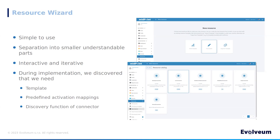We also implemented several improvements while building the resource wizard. For example, working with templates makes it easier to create multiple resources with the same configuration. We added predefined activation mappings that simplify configuration for common activation use cases such as delay delete. And finally, the connector discovery function can simplify the configuration of the connector and offer suggestions for configuration attributes.